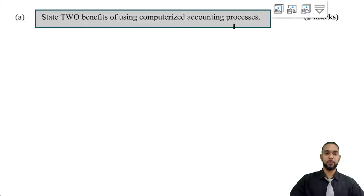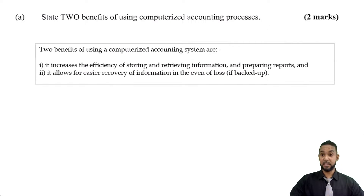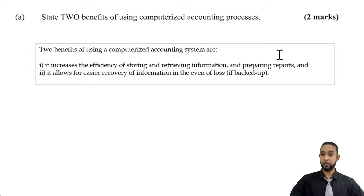So first up, we have a simple question: state two benefits of using computerized accounting processes. Two benefits of using a computerized accounting system are: it increases the efficiency of storing and retrieving information and preparing reports, and it also allows for easier recovery of information in the event of loss, if it's backed up.